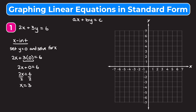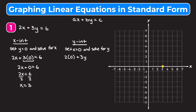We go to the graph and plot the x intercept at 3 on the x axis. Now we find the y intercept, which is where the line crosses the y axis, so the x coordinate is always 0. Setting x equal to 0, we have 2 times 0 plus 3y equals 6, which simplifies to 3y equals 6. Dividing both sides by 3 gives a y intercept of positive 2.